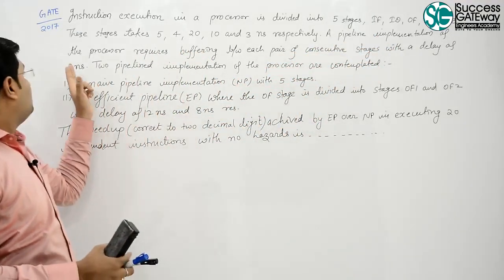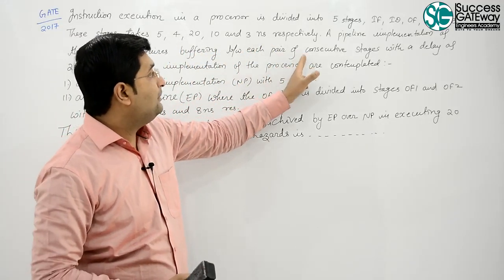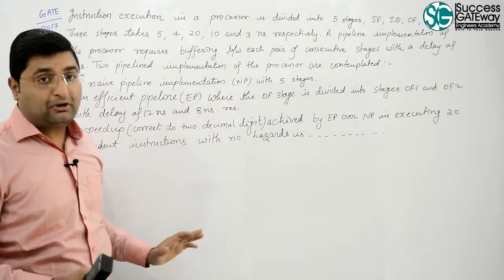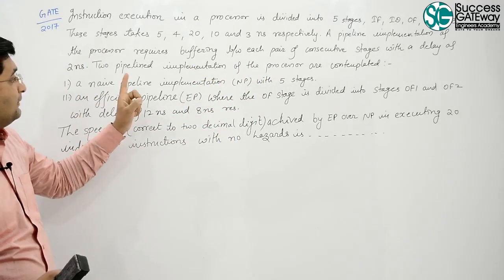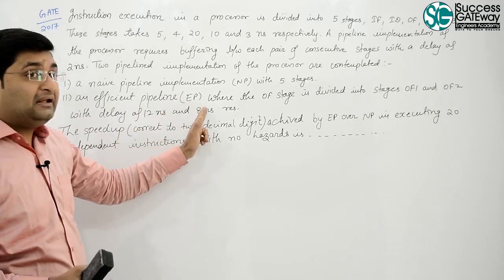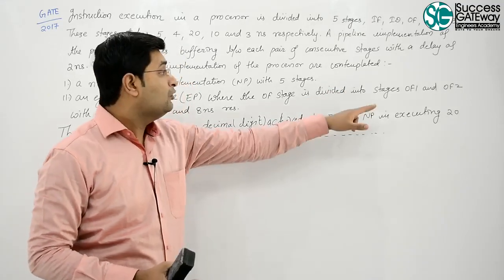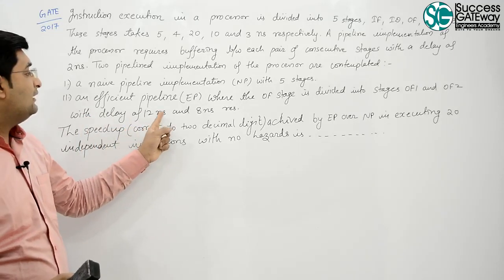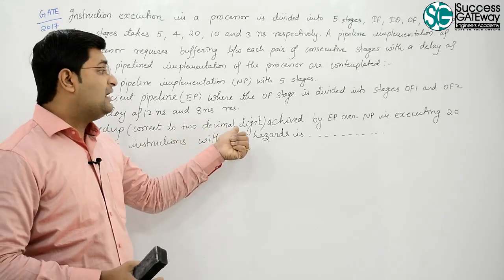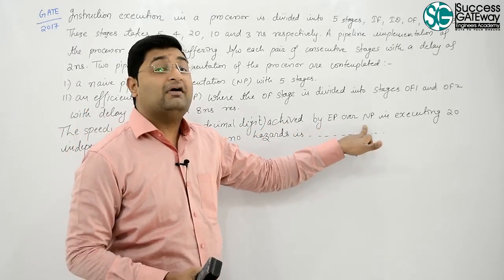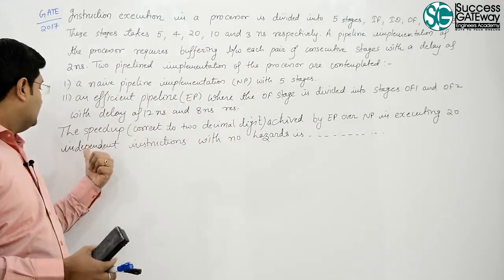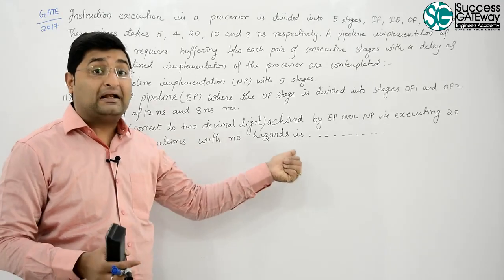A pipeline implementation of the processor requires buffering between each pair of consecutive stages with a delay of 2 nanoseconds. Two pipeline implementations of the processors are there. First is a NAV pipeline implementation known as NP with 5 stages. An efficient pipeline EP where the OF stage is divided into stages OF1 and OF2 with the delay of 12 nanoseconds and 8 nanoseconds respectively. The speedup corrected to 2 decimal digits achieved by EP over NP in executing 20 independent instructions with no hazards.